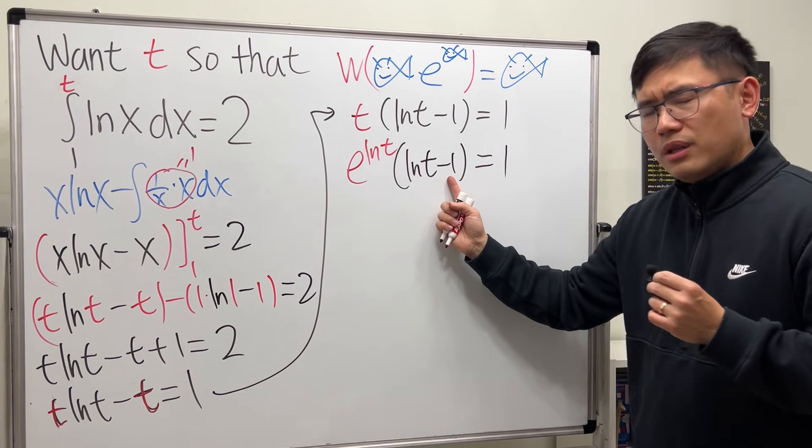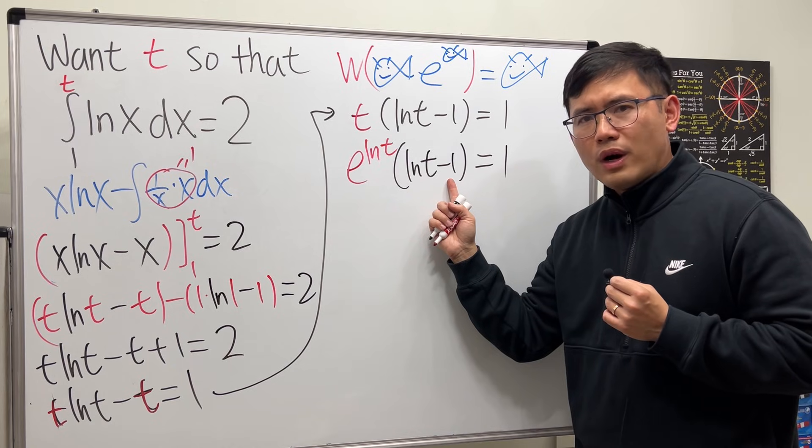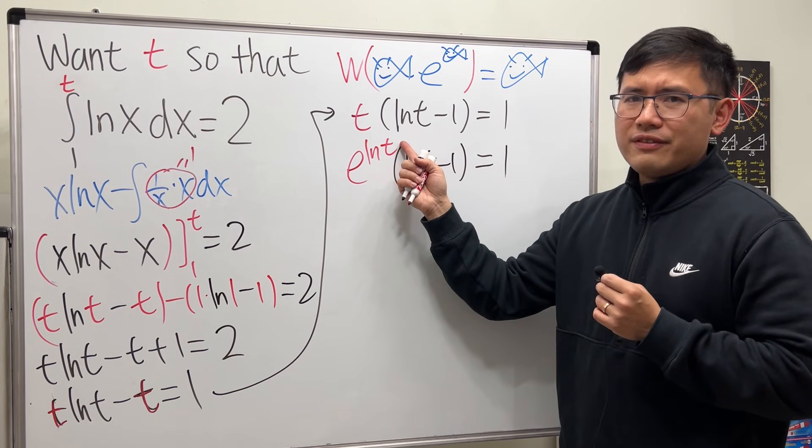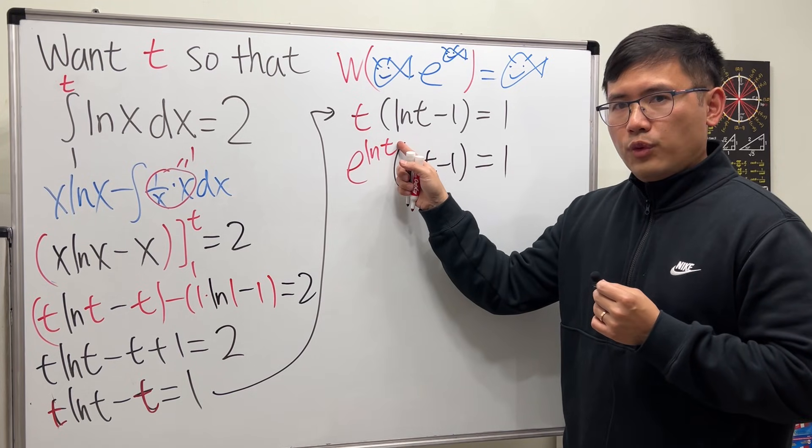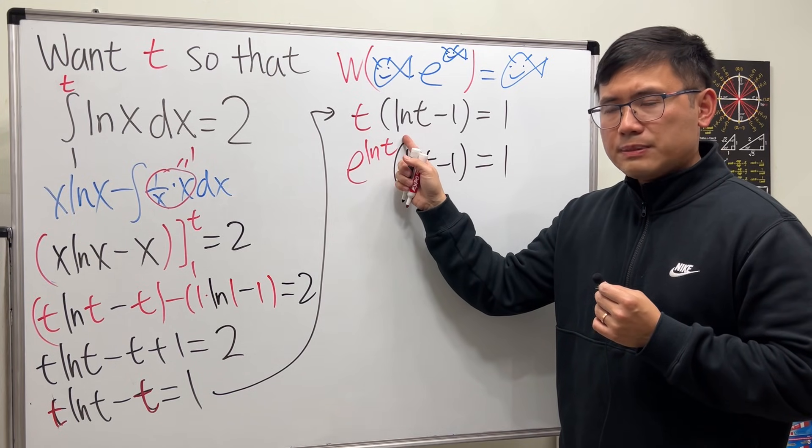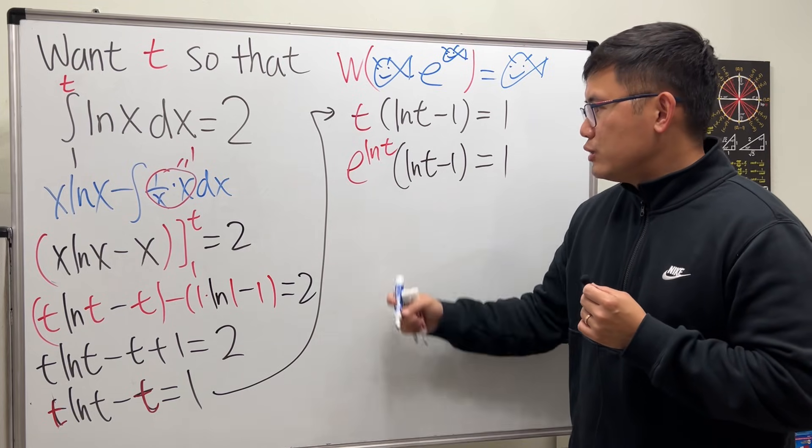I can put this in the front, and then e to the ln(t), but here we have a minus 1, but I don't have the minus 1 here, so what can we do? If you want to have a minus 1 here in the exponent, all we have to do is just divide e to the first power so that we will subtract the powers, and of course do the same thing to the other side.